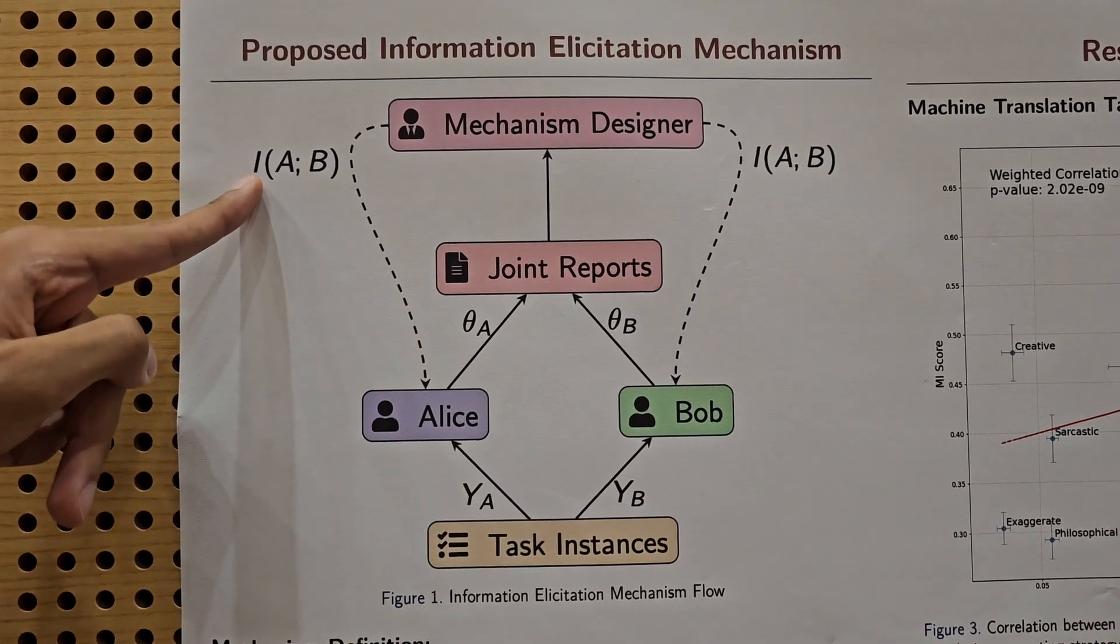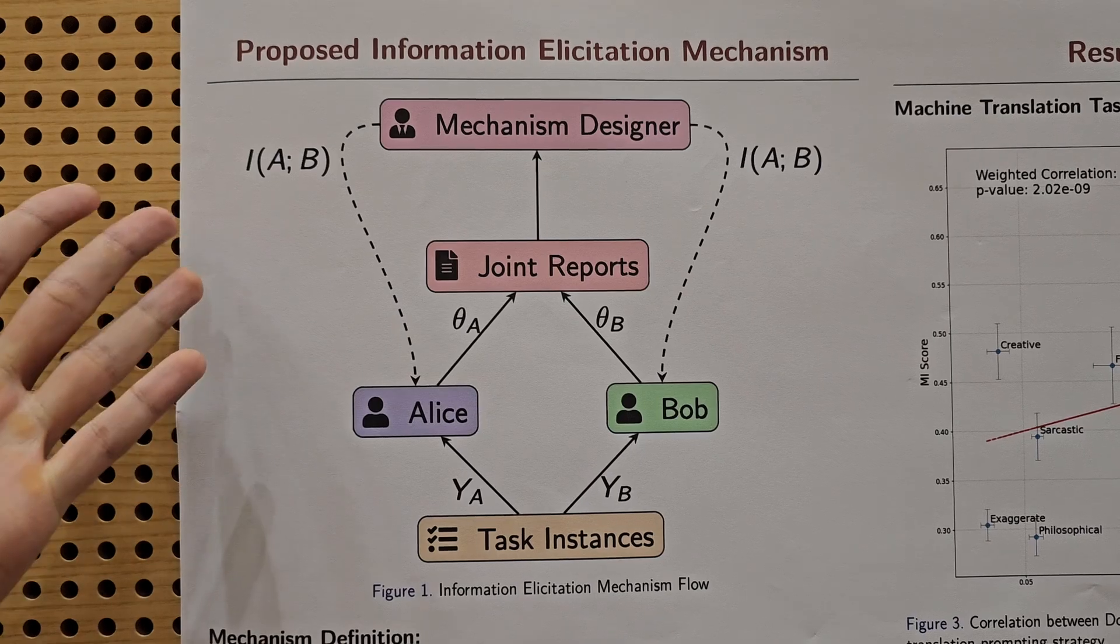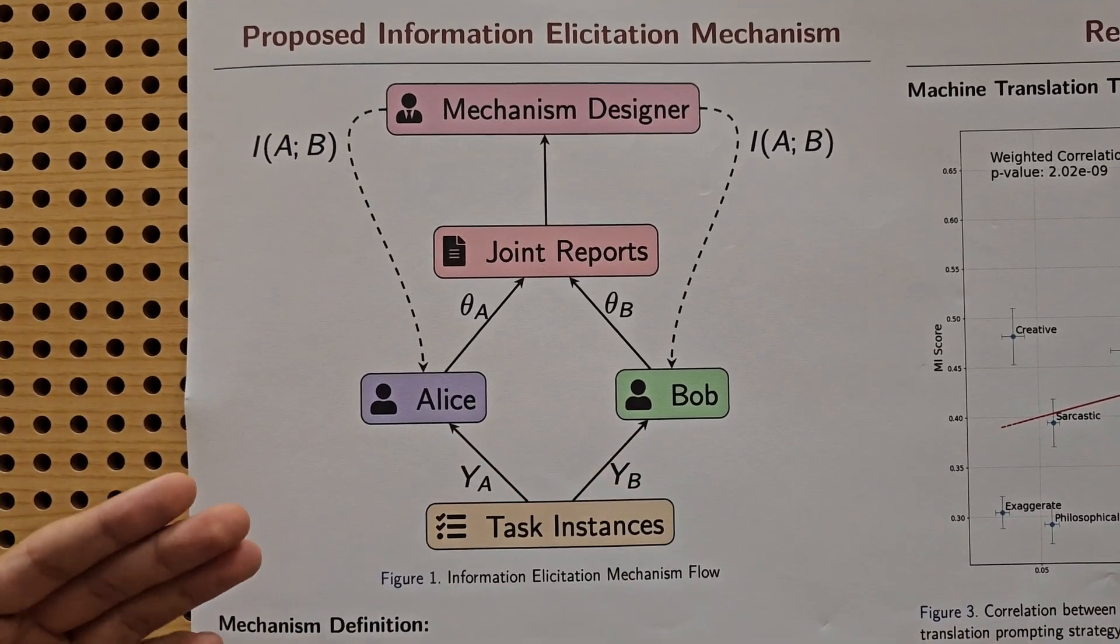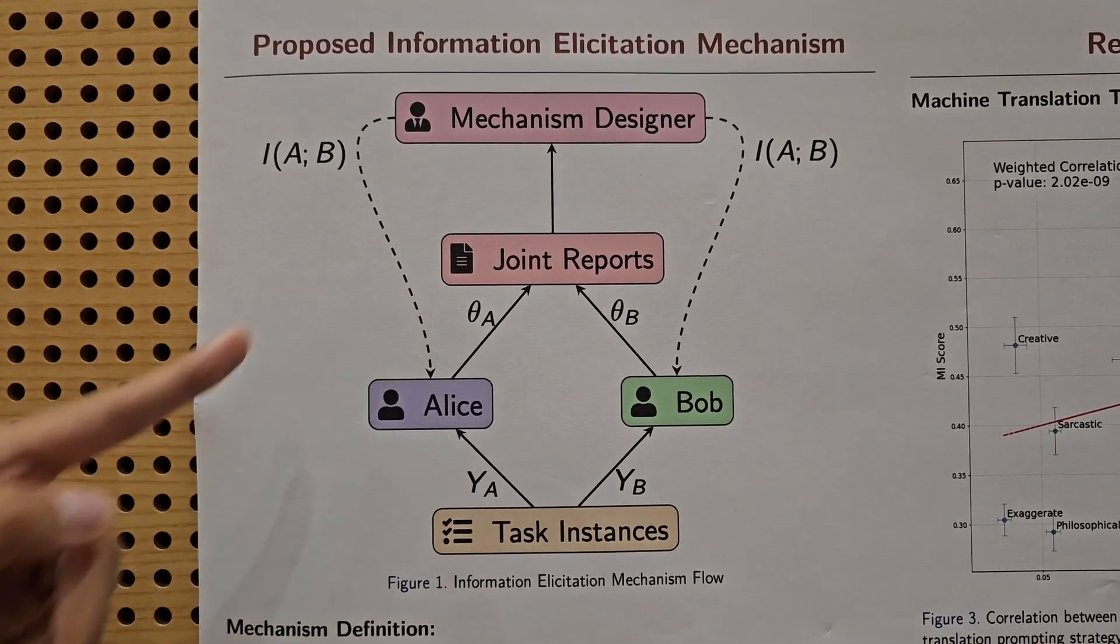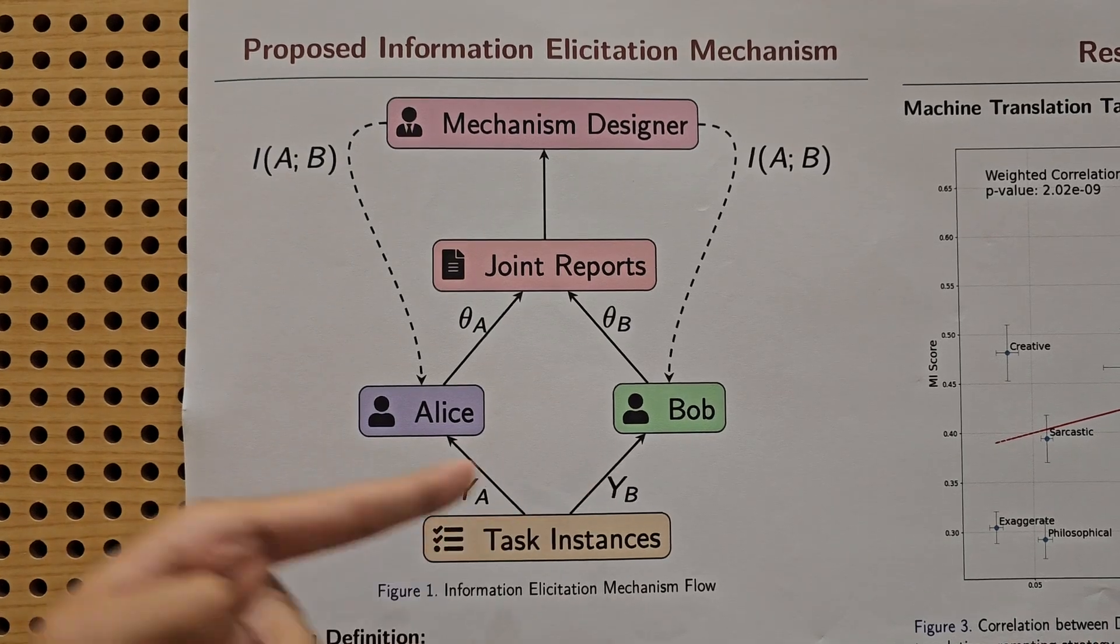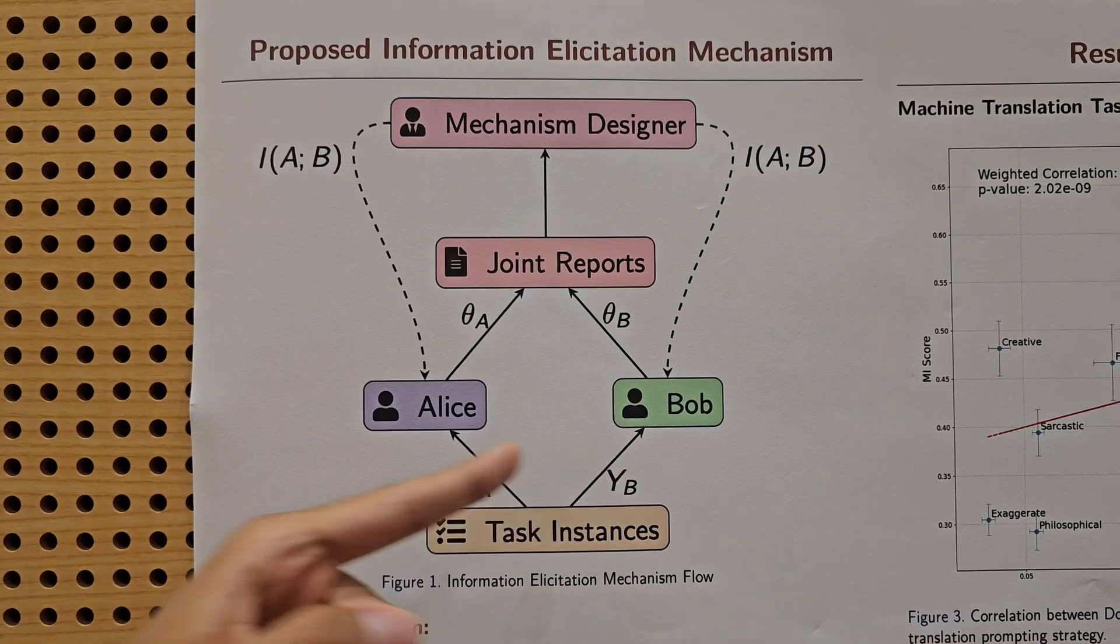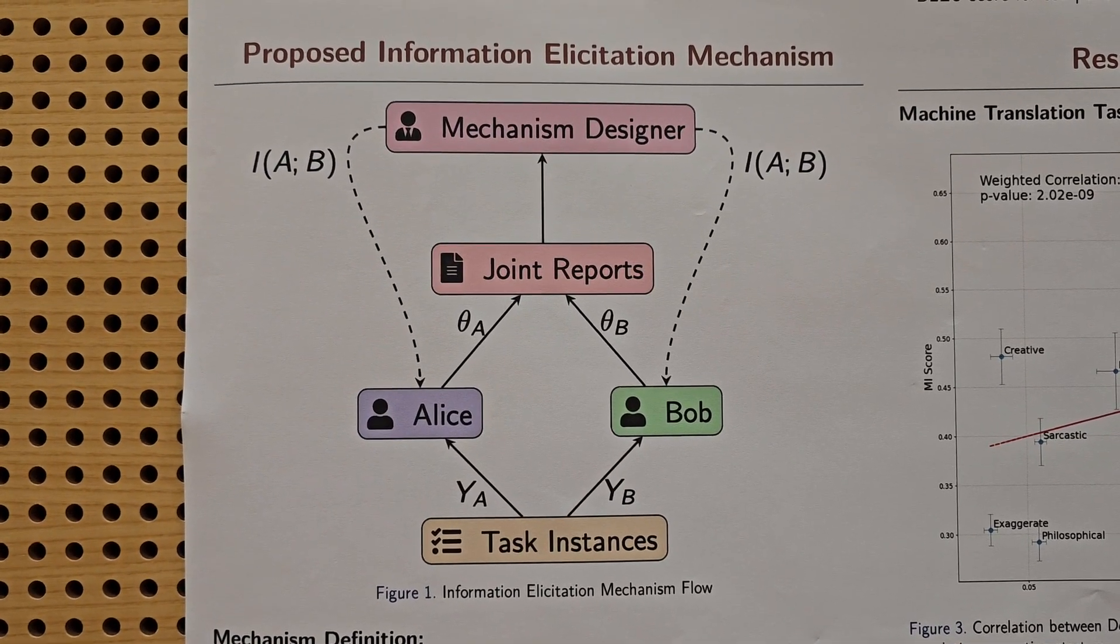This allows us to evaluate Alice and Bob without the mechanism designer necessarily having to know how to complete the task because they rely on Alice and Bob to complete it for them. But we want to make sure that Alice and Bob are properly incentivized to put in effort when they complete the task.